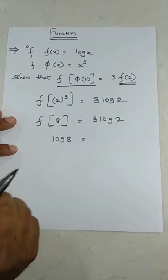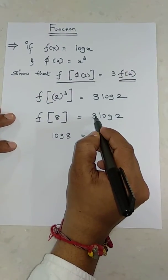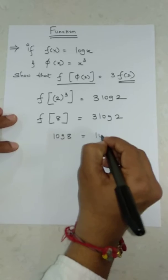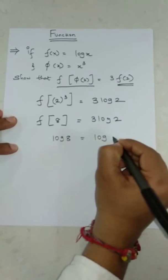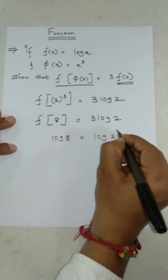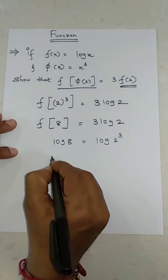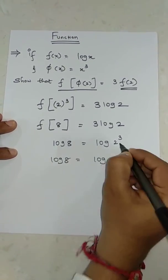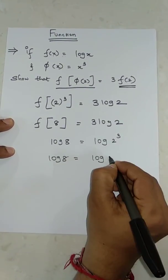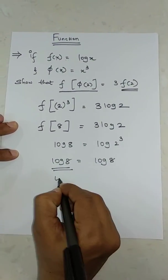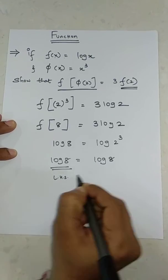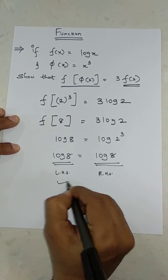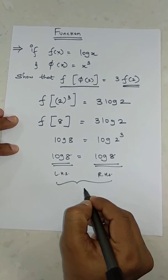On the right hand side, 3 log 2 can be written as log 2³. So log 8 = log 2³ = log 8. Left hand side equals right hand side — proved.